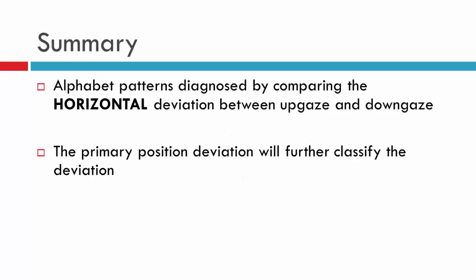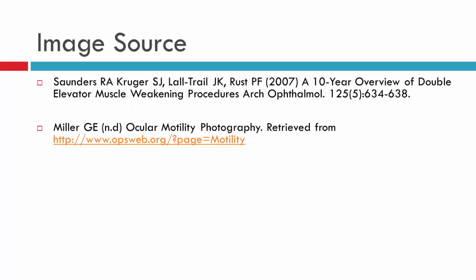In summary, the alphabet pattern is diagnosed primarily by comparing the horizontal deviation between up gaze and down gaze. We also need to consider the primary deviation to further subclassify the patient's A or V pattern, or to determine if it is a Y, X, diamond, or lambda pattern instead. This brings us to the conclusion of this video. Thank you for watching.